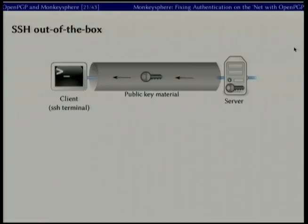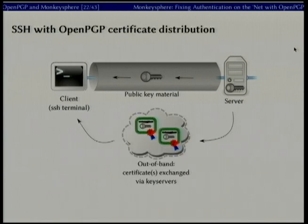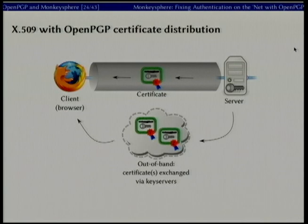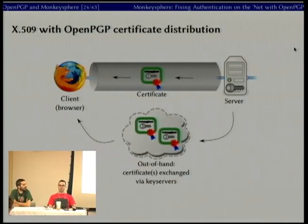If you look at SSH out of the box, the server sends public key material and you're certifying it or not certifying it based on nothing, typically. But if we have a network to exchange these things out of band, we skip the no-certifier problem and have a way of actually verifying that this public key is associated with this server. It can be automated so that users aren't confronted with manual steps that are error-prone and confusing. Making the analogy to X.509, we can do this out-of-band exchange and determine that the server is in fact who it claims to be.